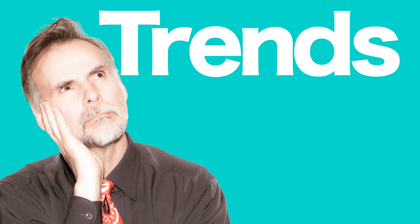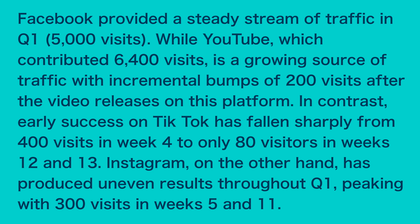The middle section should describe the main trends shown in the line chart. Facebook provided a steady stream of traffic in quarter one with 5,000 visits, while YouTube, which contributed 6,400 visits, is a growing source of traffic with incremental bumps of 200 visits after video releases on this platform. In contrast, early success on TikTok has fallen sharply from 400 visits in week 4 to only 80 visits in weeks 12 and 13. Instagram, on the other hand, has produced uneven results through quarter one, peaking with 300 visitors in weeks 5 and 11.